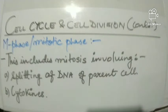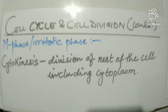There are two things taking place during mitosis. Number one, splitting of DNA of the parent cell, and number two, cytokinesis. Cytokinesis is the division of the rest of the cell including the cytoplasm. So basically, cytokinesis is nothing but division of the cytoplasm.